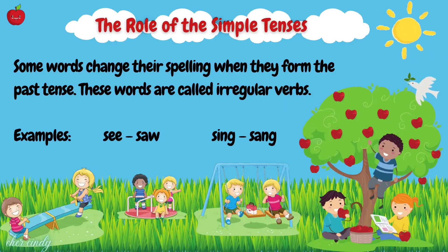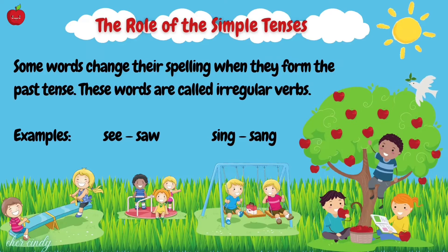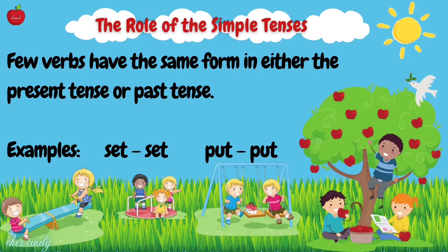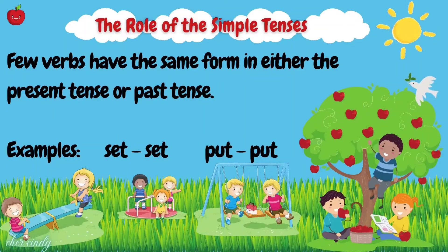Some words change their spelling when they form the past tense. These words are called irregular verbs. Examples: see, sing → sang. Few verbs have the same form in either the present tense or past tense. Examples: set → set, put → put.